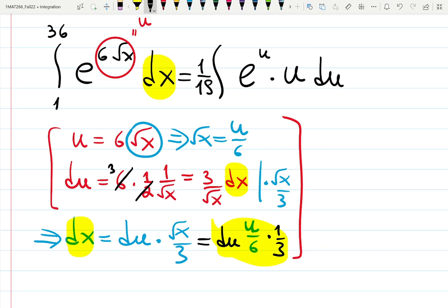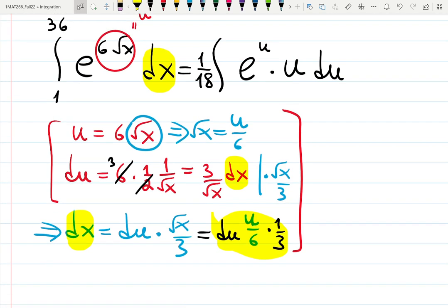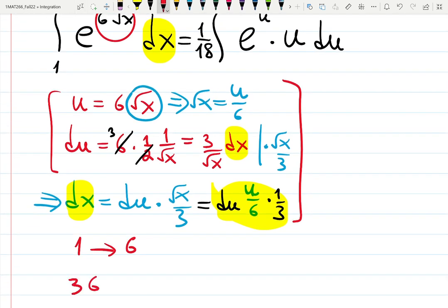You can do different things: you can leave them or you can change them. I will change them because 1 and 36 are perfect numbers for square roots, so it just makes sense to do that. So the short notation is: when x is 1, u is 6 times square root of x, so that's 6.